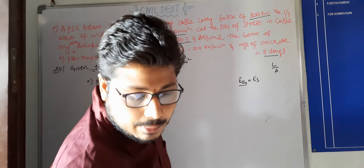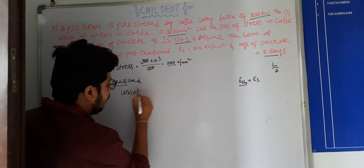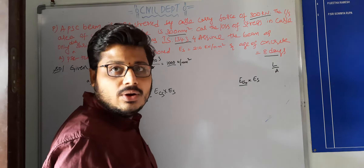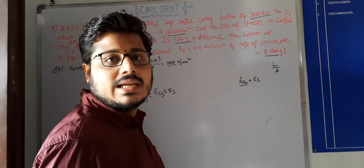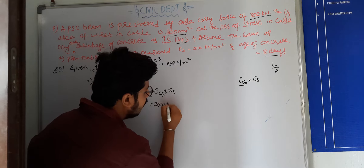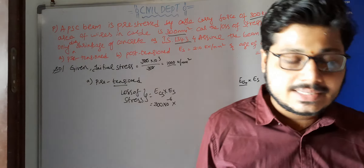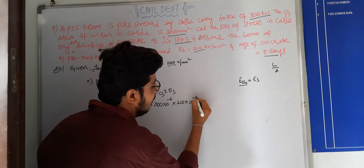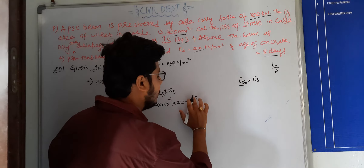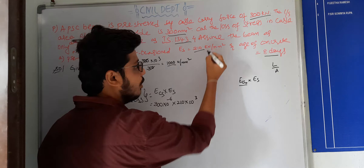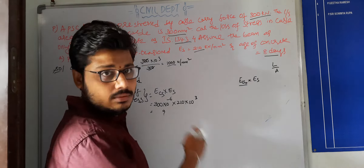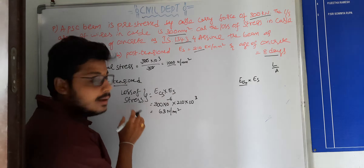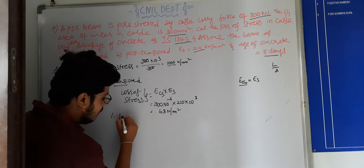For a pre-tension beam, the formula is: Loss of stress = ECS × ES. ECS for pre-tensioning = 300 × 10⁻⁶. ES = 210 × 10³ N/mm² (converting kN to N). Solving: Loss of stress = 300 × 10⁻⁶ × 210 × 10³ = 63 N/mm².